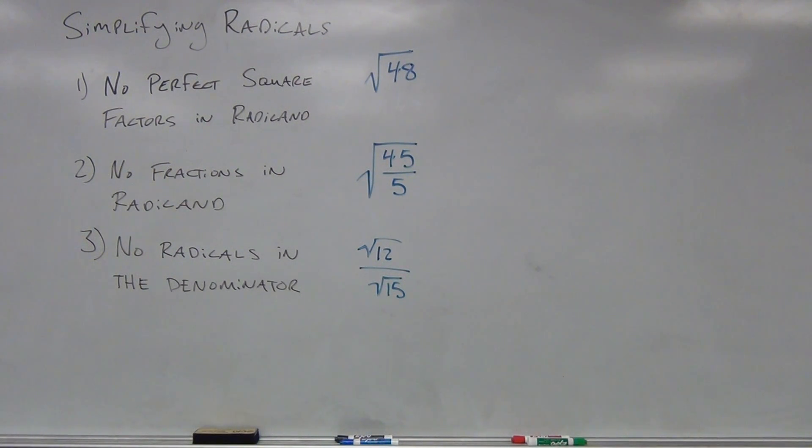We have a fraction in the radical in the next example, the square root of 45 over 5. And in number three, we've got radicals in the denominator. Yikes. Okay, so let's address all of these situations and let's see what we can do.